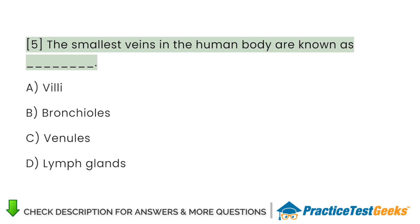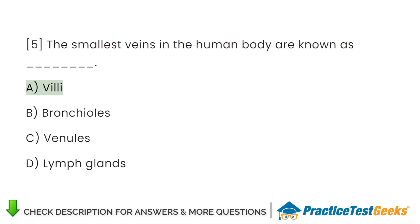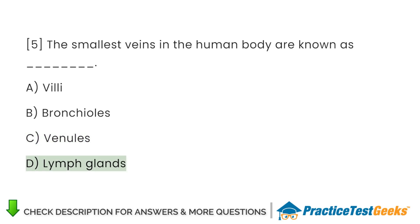The smallest veins in the human body are known as A. Villi. B. Bronchioles. C. Venules. D. Lymph glands.